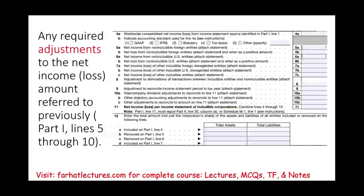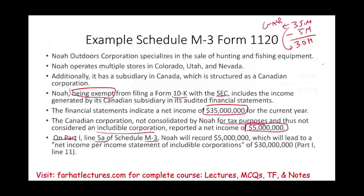For worldwide consolidated net income, we put $35 million. Then on Line 5A — income not included from foreign entities — we enter $5 million. So the net income for tax purposes is $30 million. We are now able to explain the difference between $35 million and $30 million: we had a subsidiary in Canada that is not taxable in the U.S. The form requires you to attach a statement explaining that this Canadian entity is not consolidated for tax purposes and therefore is not included.